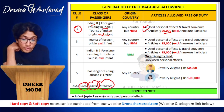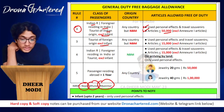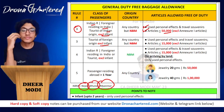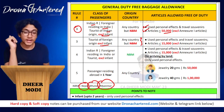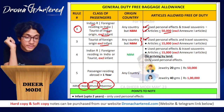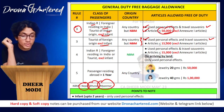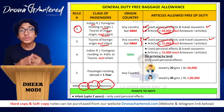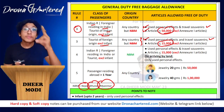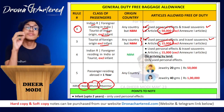Still under Rule 3, for a tourist of foreign origin (excluding infants), from any country except Nepal, Bhutan, and Myanmar: they will be allowed used personal effects, but the limit here is ₹15,000 instead of ₹50,000. So, tourist of Indian origin gets ₹50,000, tourist of foreign origin gets ₹15,000. Remember these two figures — 50,000 and 15,000.